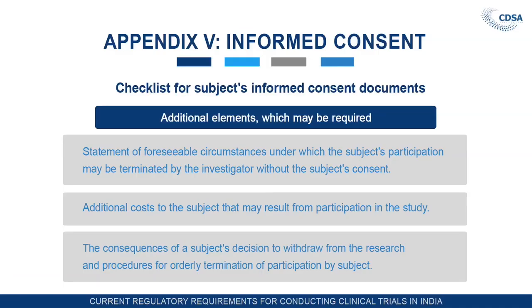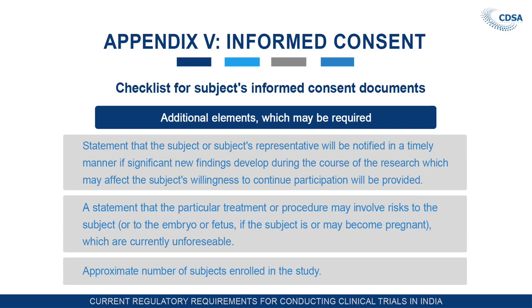Additional elements which may be required include: a statement of foreseeable circumstances under which the subject's participation may be terminated by the investigator without the subject's consent; additional costs to the subject that may result from participation; the consequences of the subject's decision to withdraw and the procedure for orderly termination; and a statement that the subject or representative will be notified in a timely manner if significant new findings develop during the course of the research that may affect the subject's willingness to continue. If the sponsor or PI becomes aware that an SAE has occurred elsewhere, that must also be informed during the clinical trial.